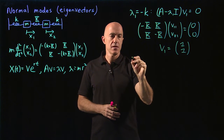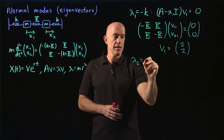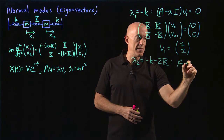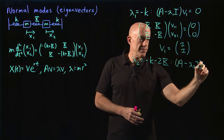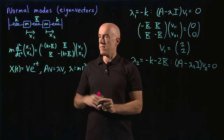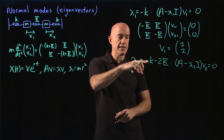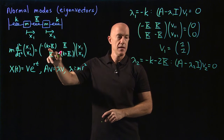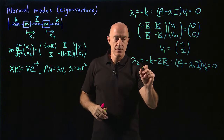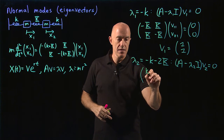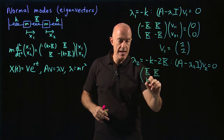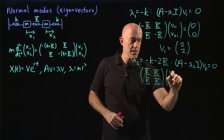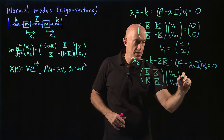The second eigenvector comes from lambda two equals negative little k minus two big K. Again, we're doing A minus lambda two I times v two equals zero. We're subtracting lambda two from the diagonal, which is the same as adding little k and adding two big K. We get the matrix: big K, big K, big K, big K times the second eigenvector, giving row one column two, row two column two equals zero.